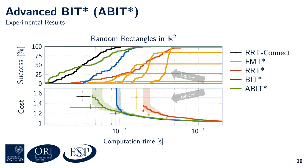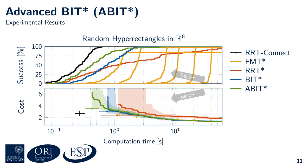Let's look at statistical results for a representative random obstacle configuration in two dimensions. Again, all planners were run 100 times for 0.2 seconds. We can see that A-BIT* is again faster than the other asymptotically optimal planners, and for this particular problem it is sometimes even faster than RRT-Connect. A-BIT* also performs well in higher dimensional spaces, as we'll see on the next slide.